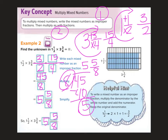Here's a picture of what was happening. If it doesn't help you, just remember: when we multiply mixed numbers, step one is improper fraction, step two is multiply, and step three is always simplify.